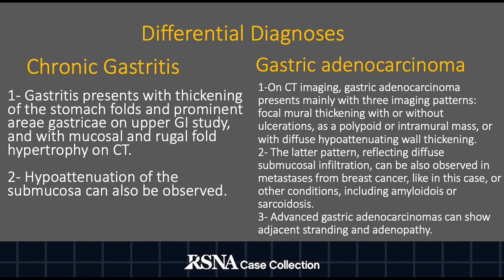Gastric adenocarcinoma can present with three imaging patterns on CT: focal mural thickening with or without ulceration, as a polypoid or intramural mass, or with diffuse hypoattenuating wall thickening. The latter pattern, reflecting diffuse submucosal infiltration, can also be observed in metastases from breast cancer, such as this case, or other conditions including amyloidosis or sarcoidosis. Adjacent stranding and adenopathy can also be observed in advanced gastric adenocarcinoma.